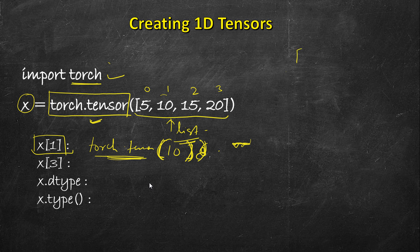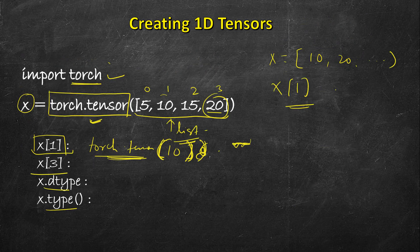In a Python list, x[1] returns a raw value, but with a tensor it returns another tensor. Similarly x[3] returns a tensor containing that value. By default, if all values are integers, calling dtype will return torch.int64, and calling x.type() will return LongTensor.